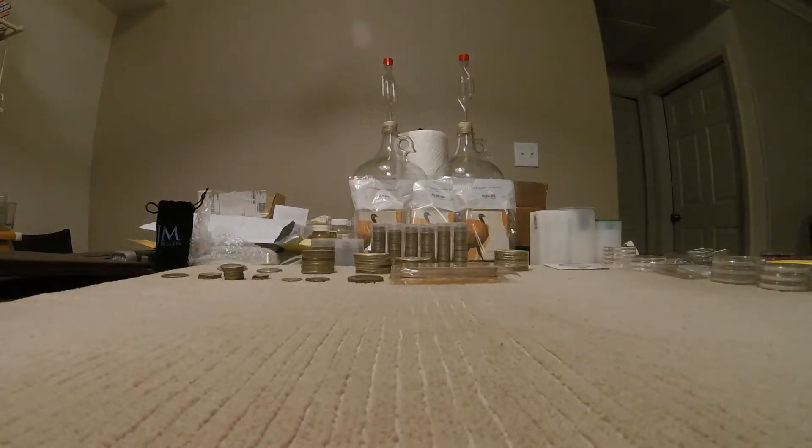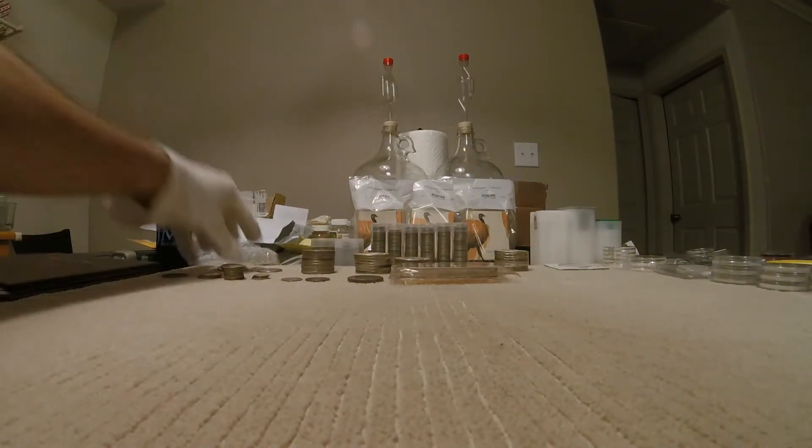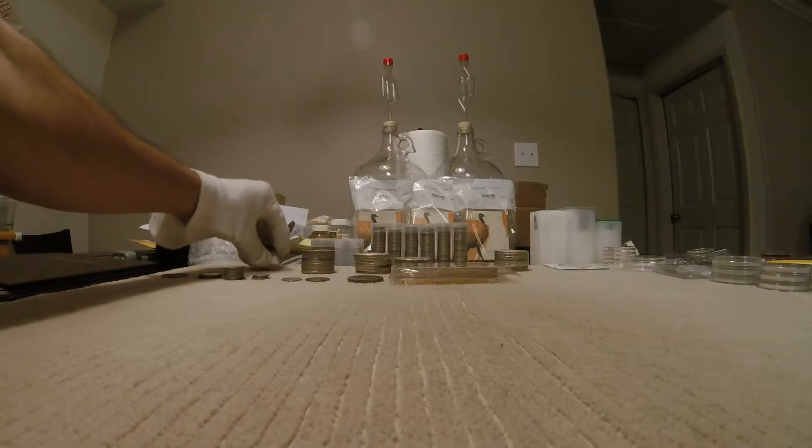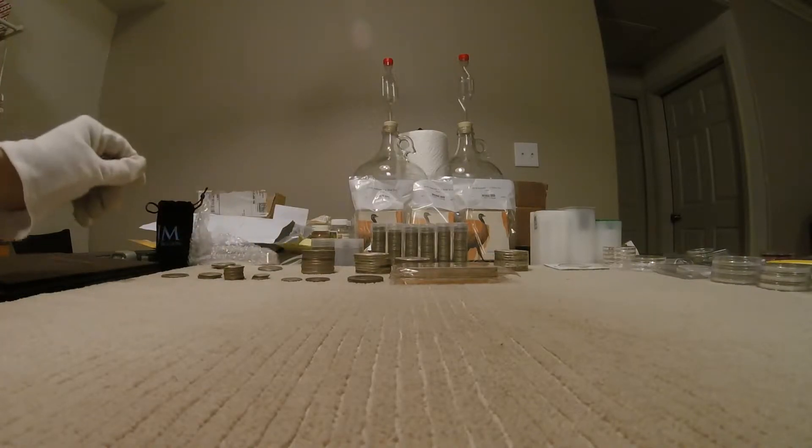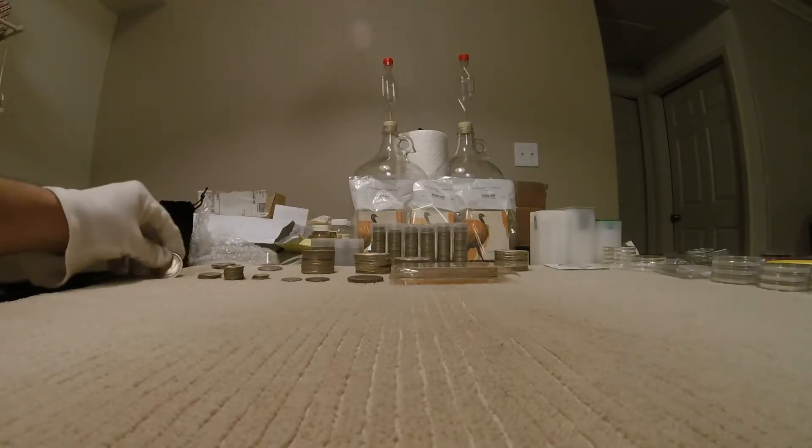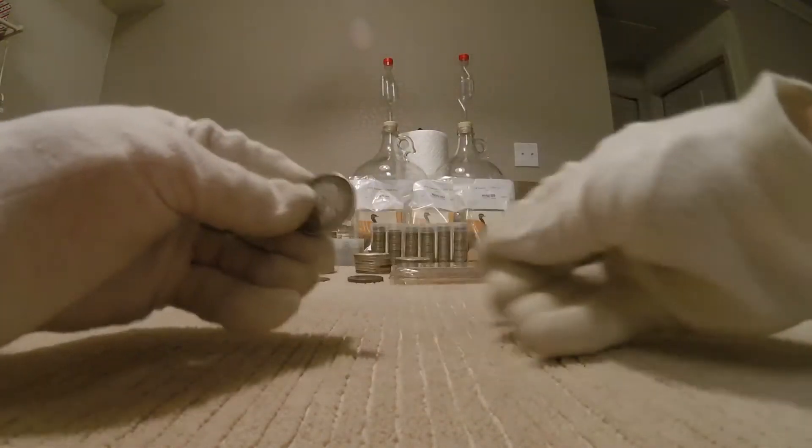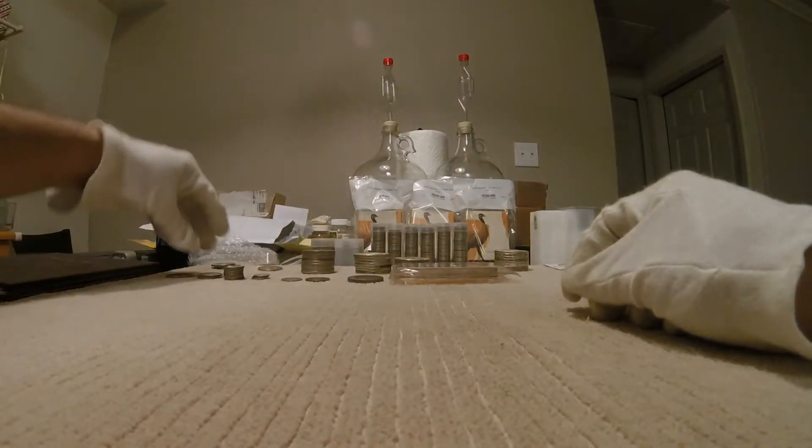That's the end of the junk silver. Except for some random halves that I have right here that I picked up recently. Next we're going to go on to Australian sterling silver. I have a Florin. These are all picked up at spot.